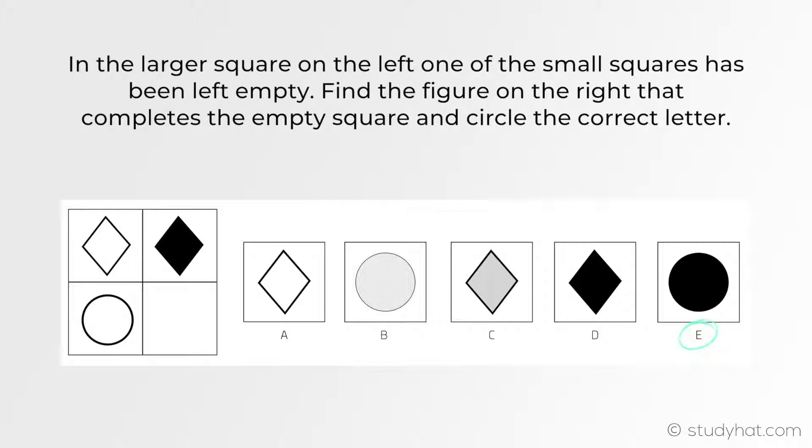The reason being is because the shape stays the same. This diamond shape still remains the same even though it's being filled in. Therefore, the circle will still remain a circle. The only difference is that it will be filled in black.